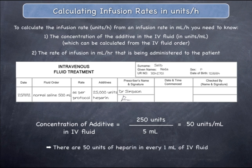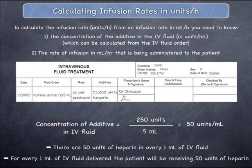This means that there are 50 units of heparin in every one mil of IV fluid. In other words, for every one mil of IV fluid delivered, the patient will be receiving 50 units of heparin.